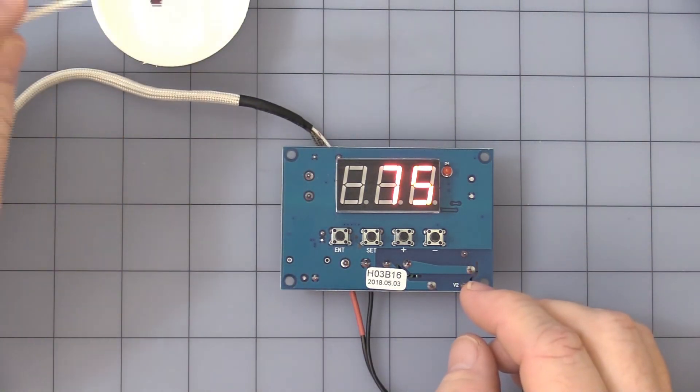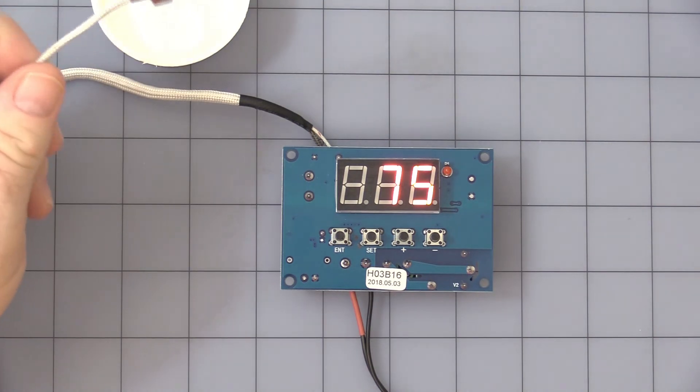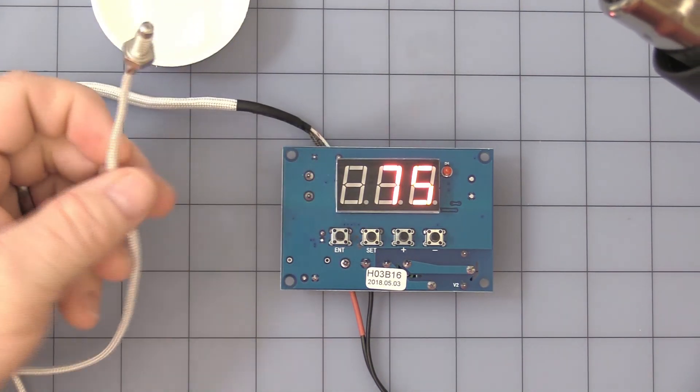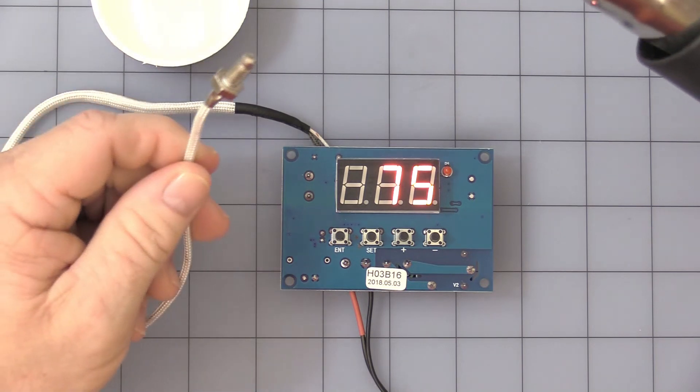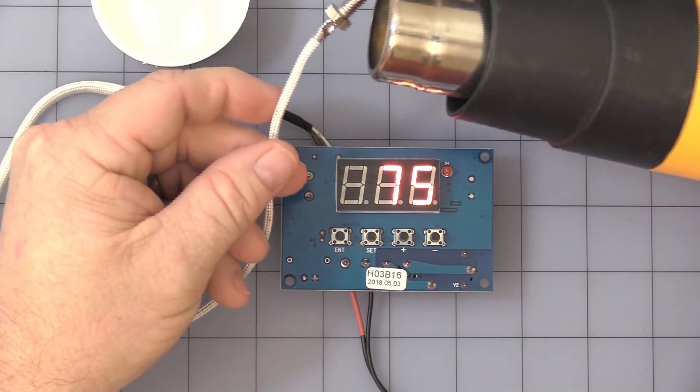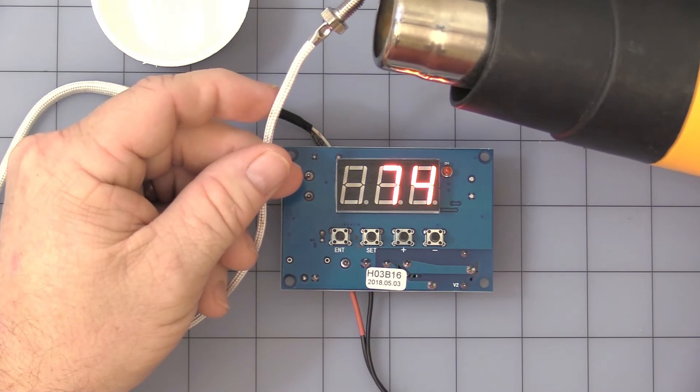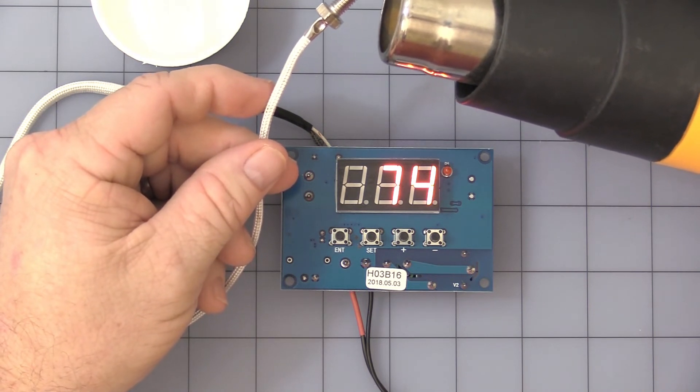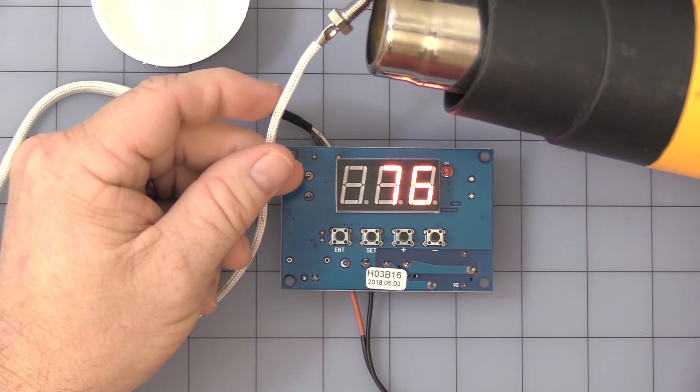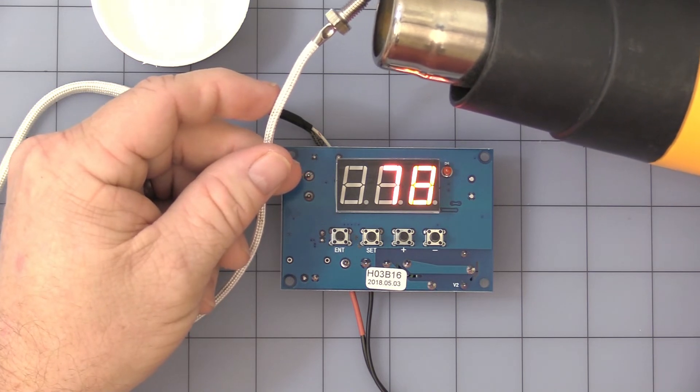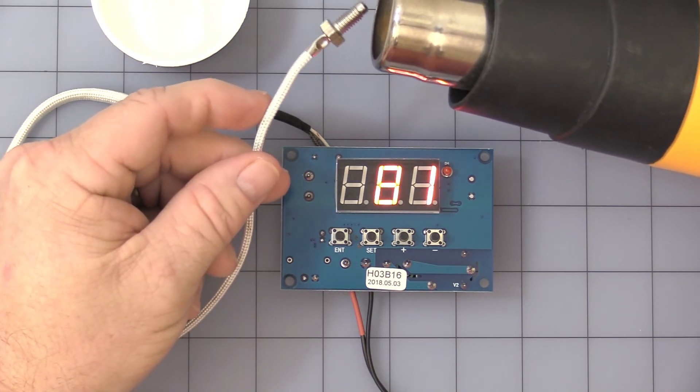Okay, that means when the probe gets up to 100 degrees Celsius, it will turn on. Actually 105 because there's a 5 degrees hysteresis. So as soon as it gets to 105, it will turn off.